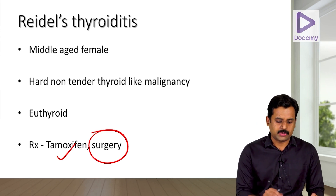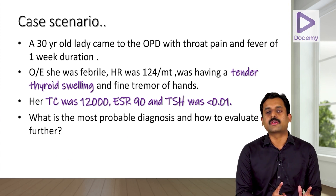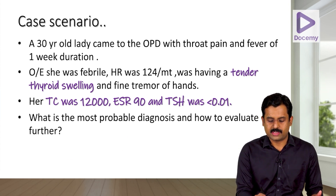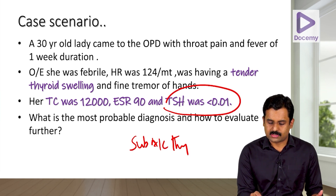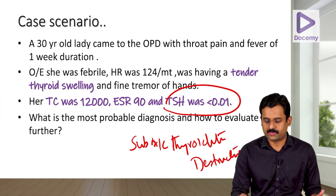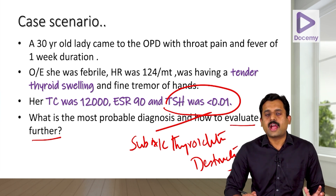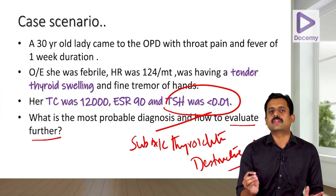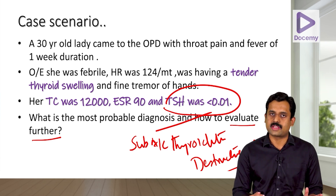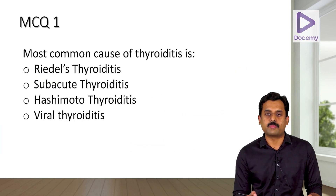Returning to the case: the 30-year-old lady with fever, tender thyroid swelling, elevated total count, and elevated ESR most likely has subacute thyroiditis. Her low TSH indicates she is in the destructive or thyrotoxic phase. Though Hashimoto's very rarely presents with a painful thyroid, you can order anti-TPO antibodies to rule out autoimmune pathology.